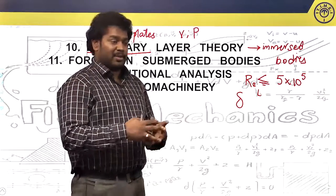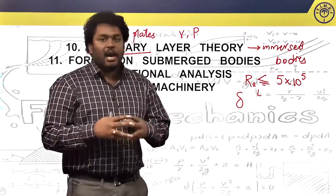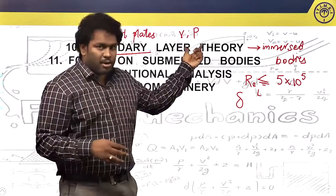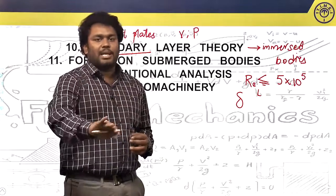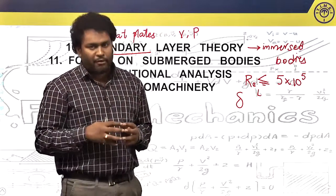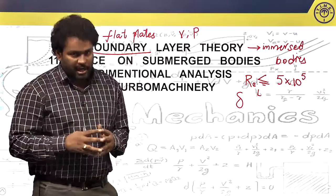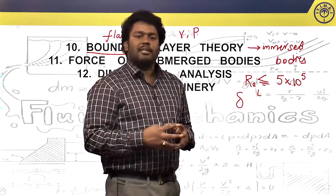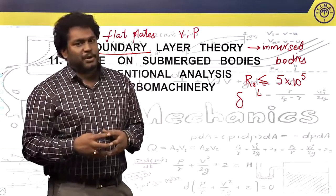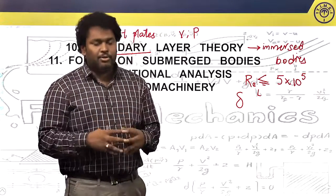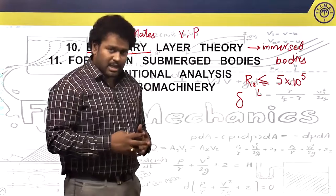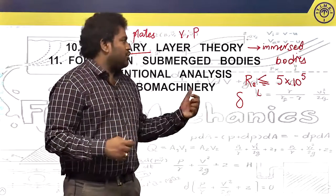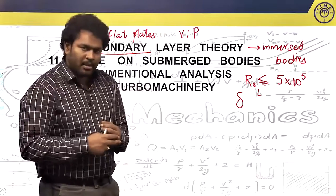We will also study boundary layer thickness delta, displacement thickness delta-star, energy thickness delta-e, and momentum thickness theta. Topics include how the boundary layer is formed, how to eliminate it, factors affecting its formation, energies to be compensated, and finally, separation of the boundary layer. Separation occurs only when the pressure gradient is positive, causing the velocity gradient to become negative, and the boundary layer is flushed out and won't be formed.